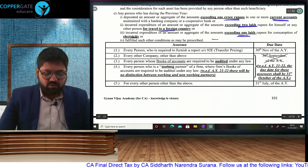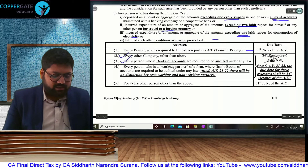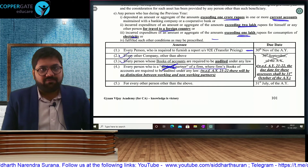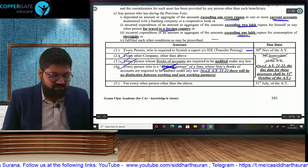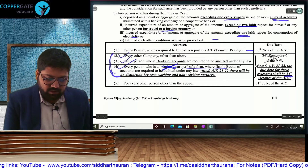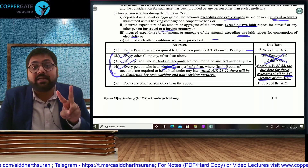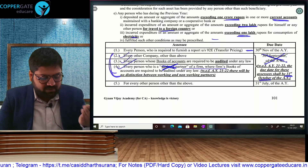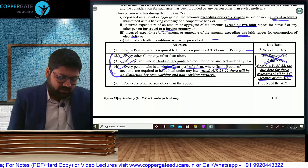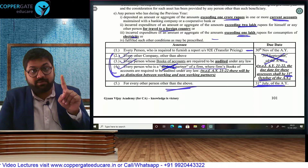What is the due date of filing return of income? Two amendments have taken place. Transfer pricing: 30th November — no amendment. Company, person whose books of accounts are audited, and partner of a firm where books are audited — the word 'working partner' has been removed, so both working and sleeping partners are now covered. First amendment: all partners of a firm under tax audit, whether working or sleeping, get covered, and the due date is now 31st October — changed from 30th September. Third due date — everybody else: 31st July. So the two amendments are: audit due date changing from September to October, and all partners of firm under tax audit, whether working or sleeping, are now covered.